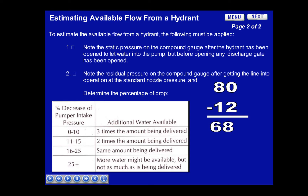In this case, we'll use 80 as our static pressure. After we supplied one fire attack line, we noticed a drop in our intake pressure of 12 pounds, which left 68 PSI as our residual pressure.